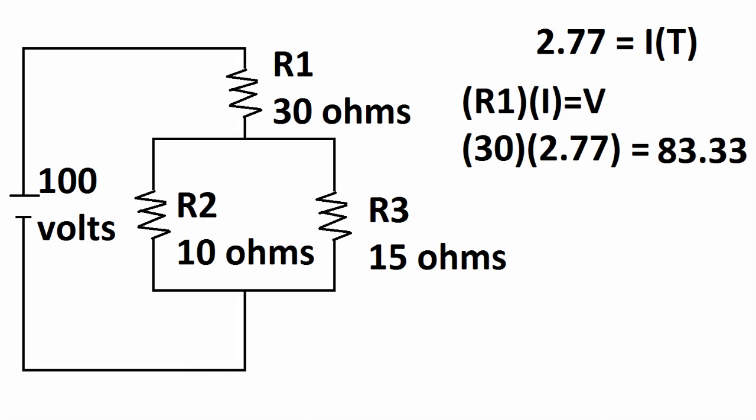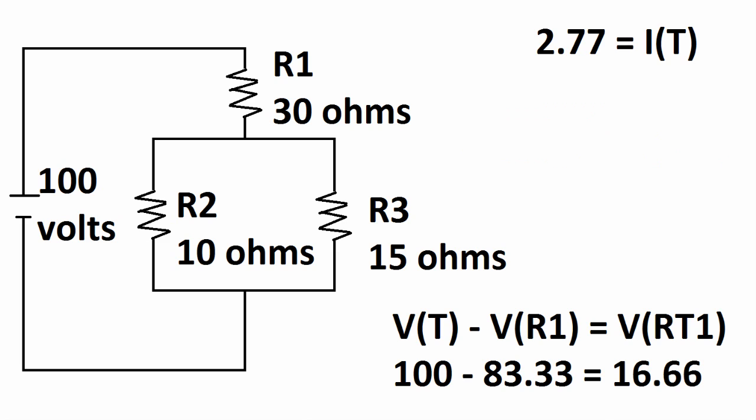The current total will be flowing through resistor 1. So we take the resistance of resistor 1 times the current total — 30 ohms times 2.77 amps — and this gives us 83.33 volts for resistor 1. Now we take the total voltage of the circuit, 100 volts, minus the voltage of resistor 1, 83.33 volts, and this gives us the voltage of resistance total 1 of 16.66 volts.